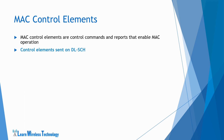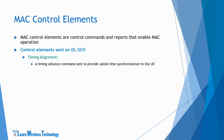Let's look at the control elements sent on DLSCH. First is Timing Alignment — a timing advance command sent to provide uplink timing synchronization to the UE. It has a size of 6 bits. Timing advance is periodically signaled by the E-NodeB to the UE by means of MAC control element. The initial timing advance is sent in the random access response message, and subsequent timing advances are signaled within the MAC control element. The LCID field will have the value 11101, indicating the MAC PDU transmitted by E-NodeB contains a timing advance command.